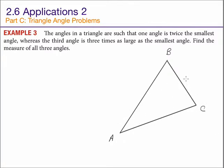Now, I could also label the sides A, B, and C, but I don't need to, because I'm only working with angles in this problem. Here's what I know. The angles in a triangle are such that one angle, let's say this one here. This angle right here is twice the smallest angle. Angle B is twice the smallest angle. It's twice A.